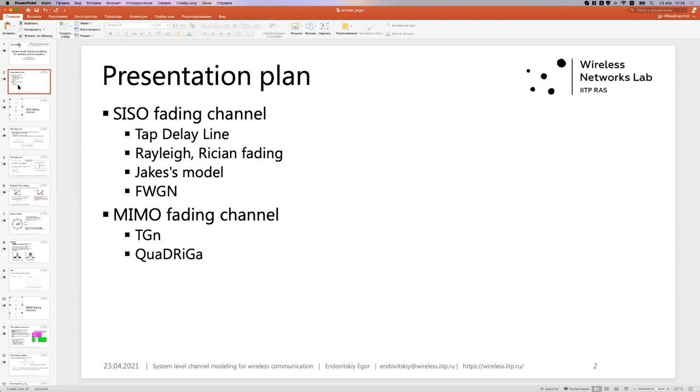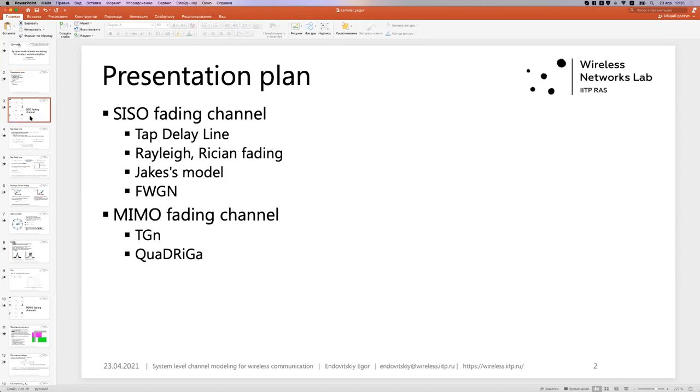Then I'll tell about Rayleigh and Rician fading and when they emerge. Then I'll tell about two implementations: Jake's model and filtered white Gaussian noise. Then I will move on to MIMO fading channel, TGN and Quadriga. The first one uses some techniques from SISO fading channel generation, so the first half is also useful. So let's start.